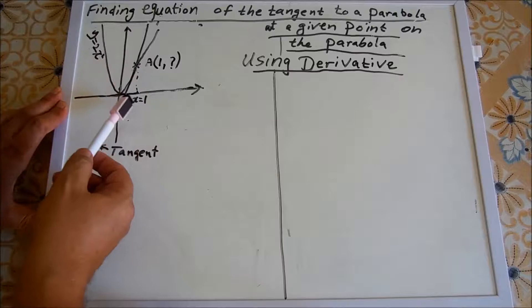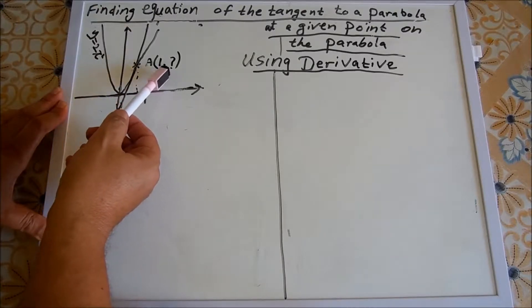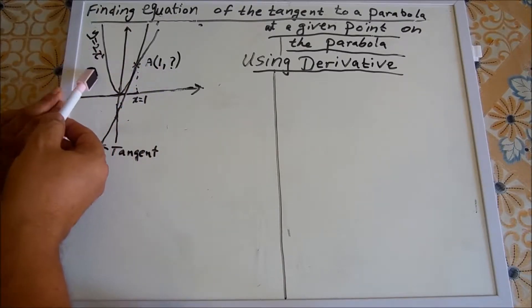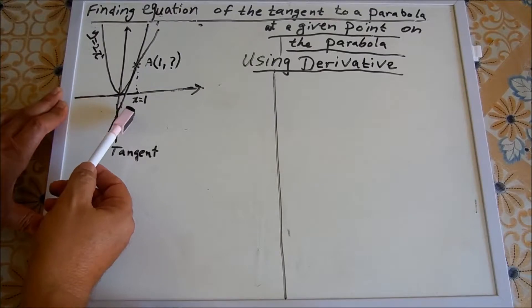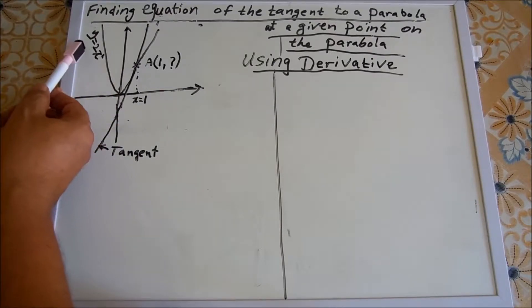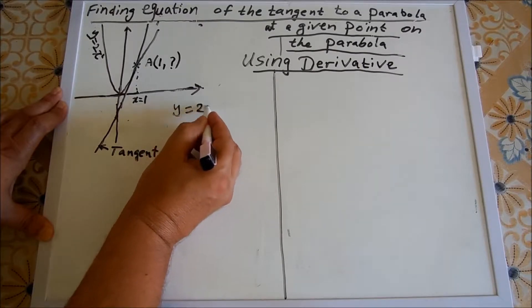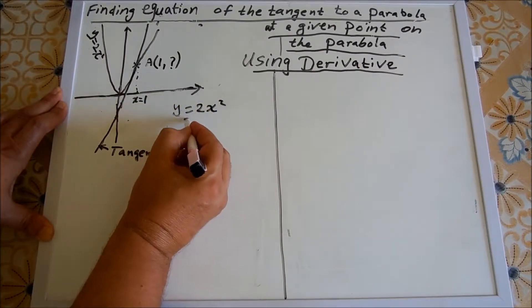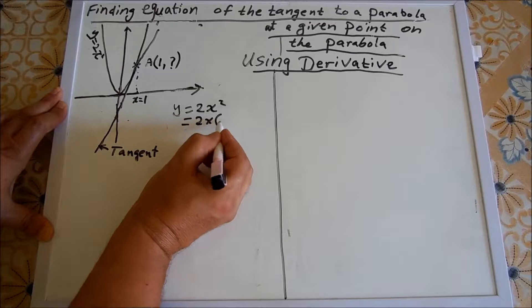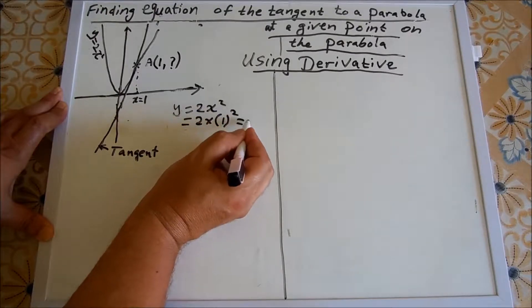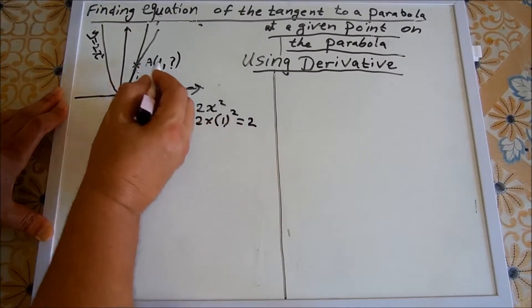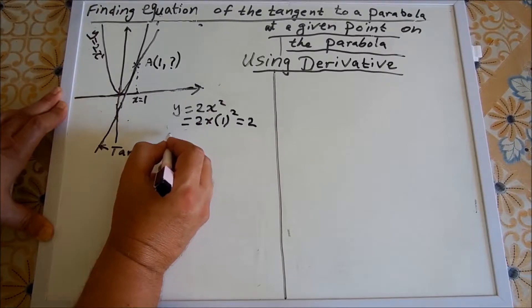For this point, x equals 1, so it's simple to find its y-value because y equals 2x squared. So all we have to do is sub x equals 1 into y equals 2x squared, so y equals 2 times 1 squared equals 2. So for point A, its y-value is 2.